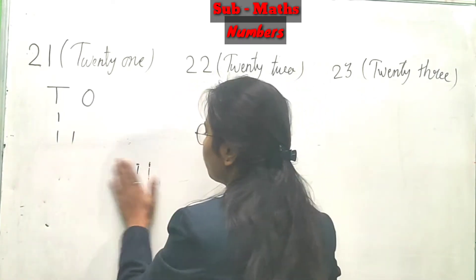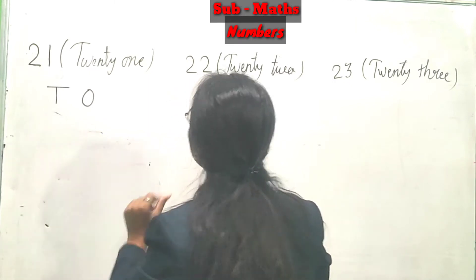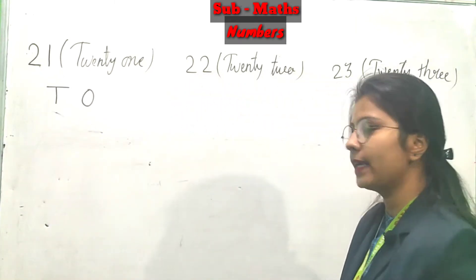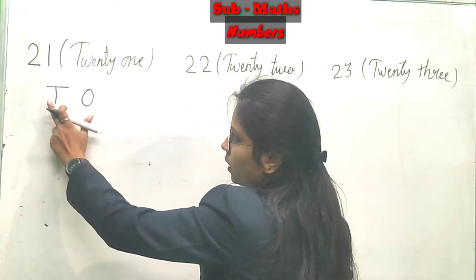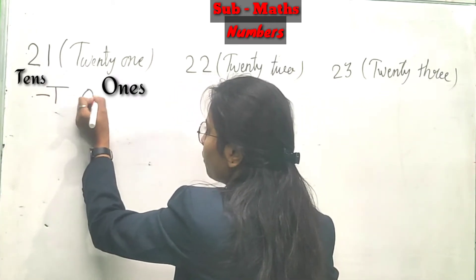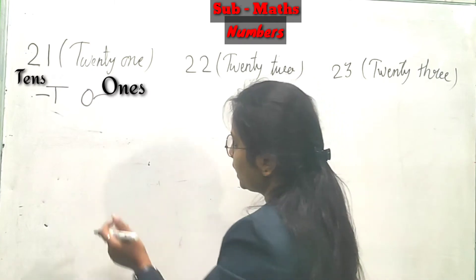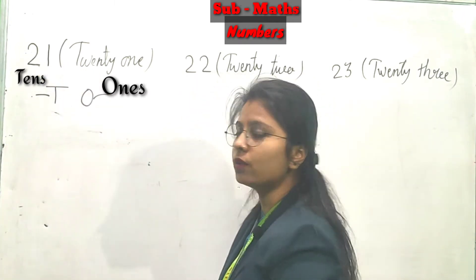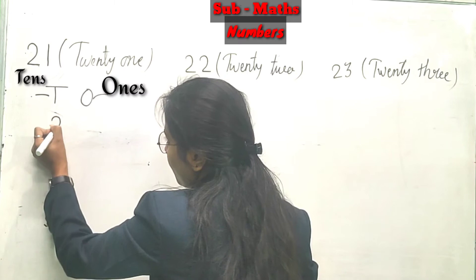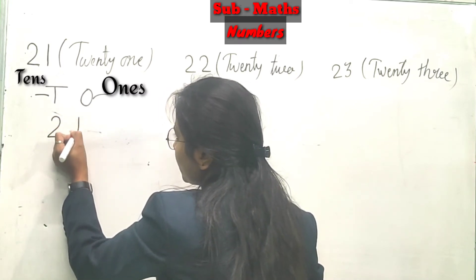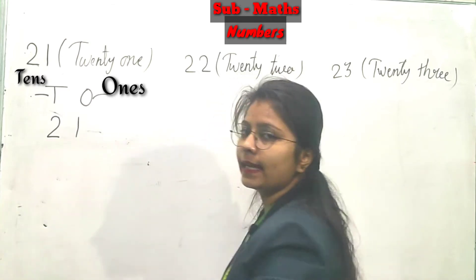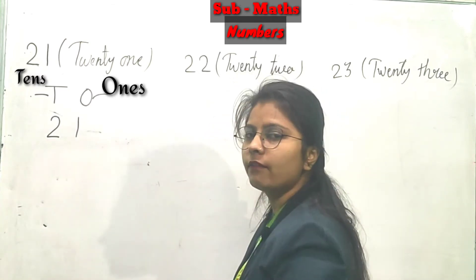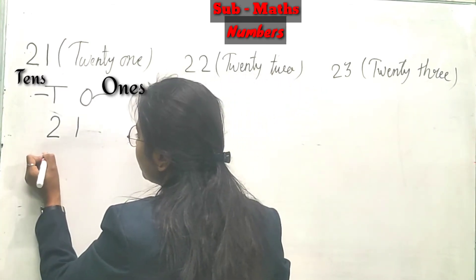Isi tariqe se haam ko 21, 22 and 23 write karna hai. Chaliye dekhte hai. Ye ho ga hamara T - tens, aur ho ga hamara ones. 21 diya huwa hai, to 2 ko haam likhen ge tens mein and 1 ko likhen ge ones mein. Isi tariqe se 21.